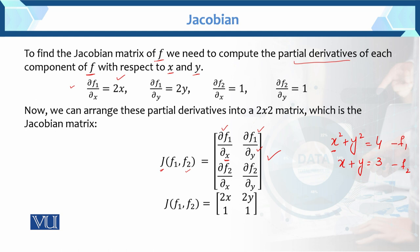Curly f1 over curly x — equation humare paas thi x squared plus y squared equals 4. Ab humnye f1 ka partial derivative liya with respect to x, kya ho jaega? 2x. F1 partial derivative with respect to y: 2y. Similarly, f2 partial derivative with respect to x: 1. And partial derivative humnye f2 ka liya with respect to y: 1. Now put these values in this matrix: 2x, 2y, 1, 1. This is the Jacobian of f1 and f2.